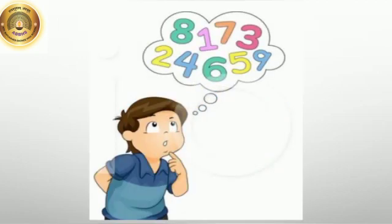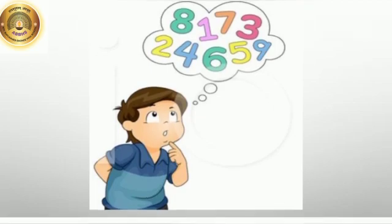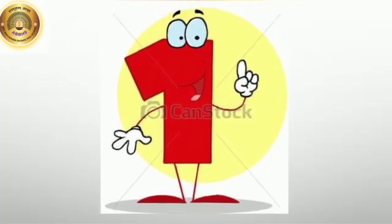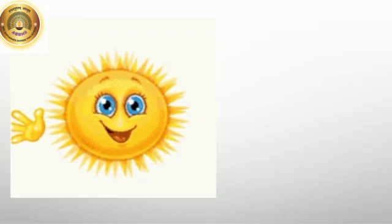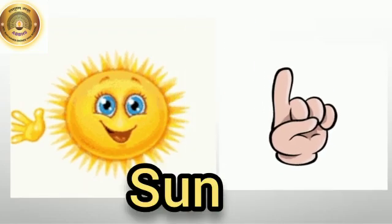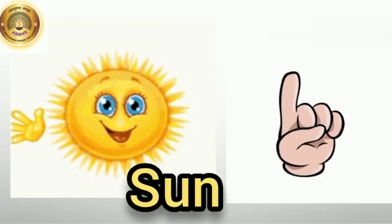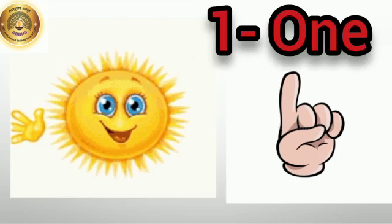In the number series, which number will come first? Yes, this is 1. Now, see the first picture. What is this? This is the sun. How many suns are here? One.